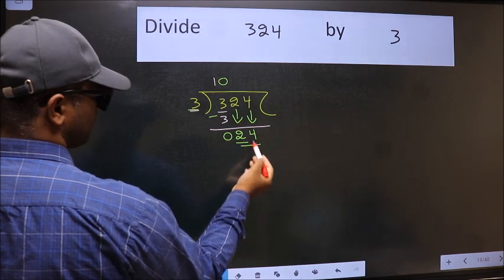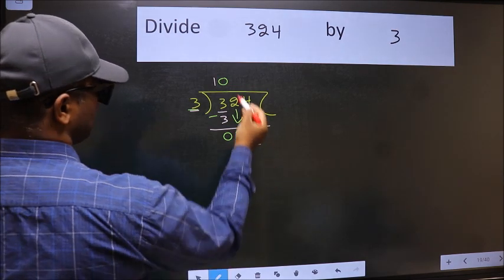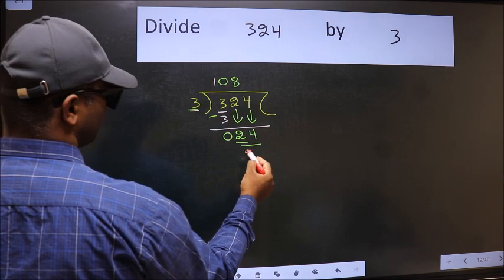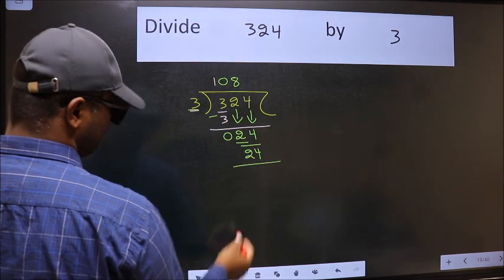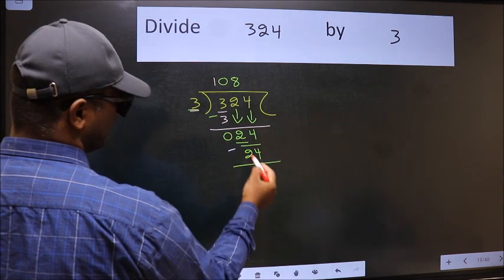Now 24. When do we get 24 in 3 table? 3 8s, 24. Now we should subtract. We get 0.